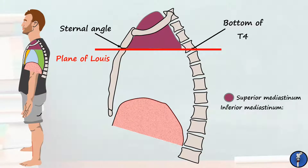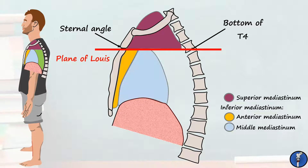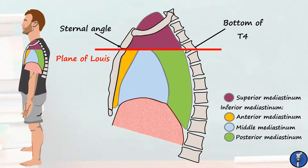The inferior mediastinum can be further subdivided into three parts in relation to the heart. Anterior to the heart is the anterior mediastinum, where the heart sits is the middle mediastinum, and posterior to the heart is the posterior mediastinum. Let's take a closer look at these sections now and see what structures lie within them.